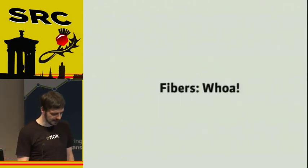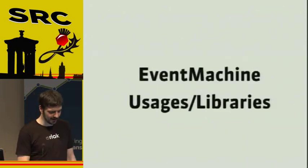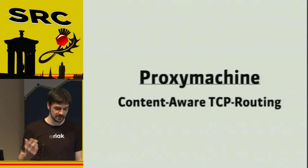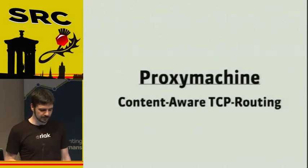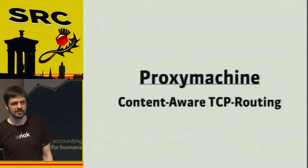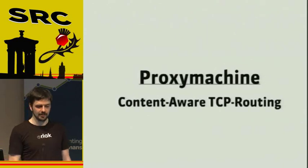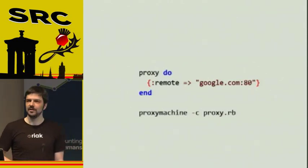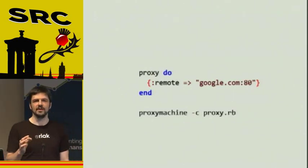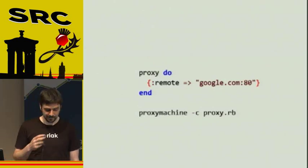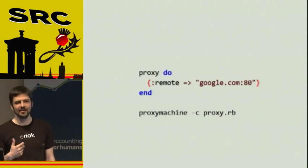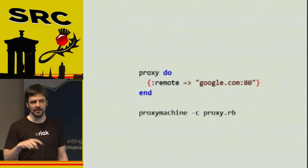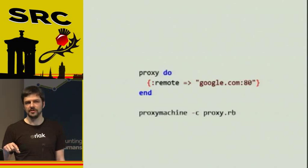There are some nice libraries built on top of EventMachine by companies. This one, for example, is used at GitHub. It's called proxy_machine, and it's basically a content-aware TCP router. Three lines of code give you a proxy that will transfer all the traffic coming into a single socket to Google — because Google wants all your data anyway. Actually, they're using that whenever you clone a repository — they use proxy_machine underneath to figure out on which of the file servers the repository is located.